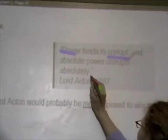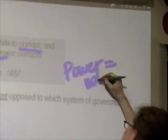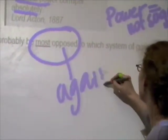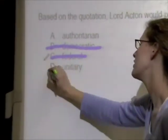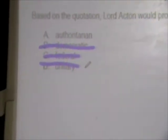Quote: 'Power tends to corrupt, and absolute power corrupts absolutely.' Power equals not so great — corrupt means someone's not doing what they should be doing, and absolute power causes even greater problems. Based on this quotation, Lord Acton would probably be most opposed to which system of government? Authoritarian — probably, because they're going to have that absolute control. Democratic — he's not going to be opposed to that, because there's no absolute power there. Federal and unitary are thrown in to mislead us; unitary talks about the central government having power, but that's a form, not a system or type. So the right answer is A, authoritarian.